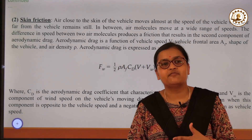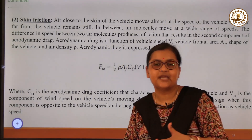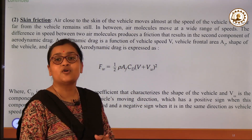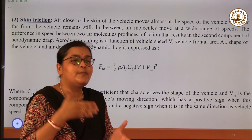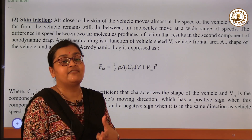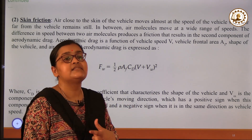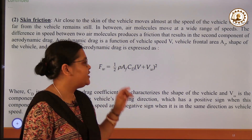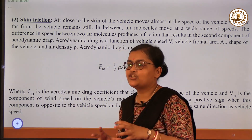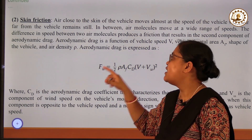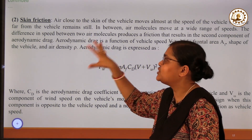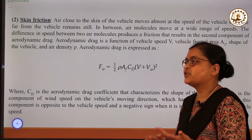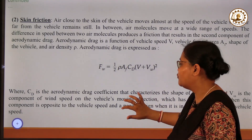One important thing to keep in mind when solving problems: VW has a positive sign when the wind component is opposite to the direction of vehicle speed, and a negative sign when it is in the same direction as vehicle speed. With this in mind and the data available, we can calculate FW. Adding the skin friction and shape drag components together gives the total aerodynamic drag, which is a resistive force for vehicle movement.